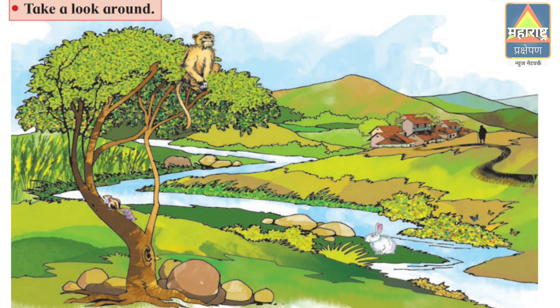There are rivers, streams, and lakes. A stream means a small narrow river. There is air. There are hills and mountains. There are jungles and forests. These are fields and houses and roads, and also barren lands.